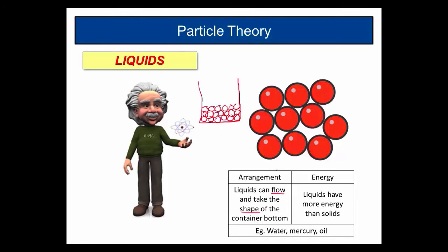So liquids can flow, take the shape of the container at the bottom, and they have got, because they're moving around, they've actually got more energy than solids. Liquids have got more energy than solids. Examples are water, mercury, which is the only liquid metal, and oil.